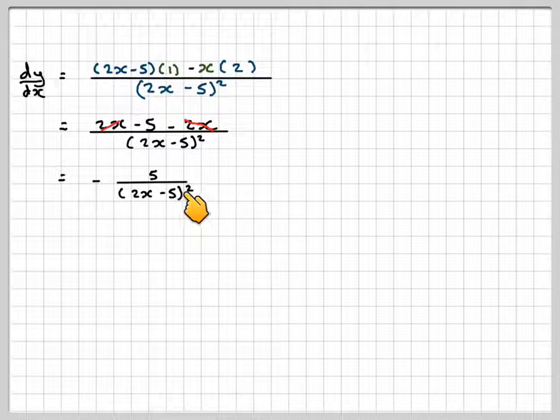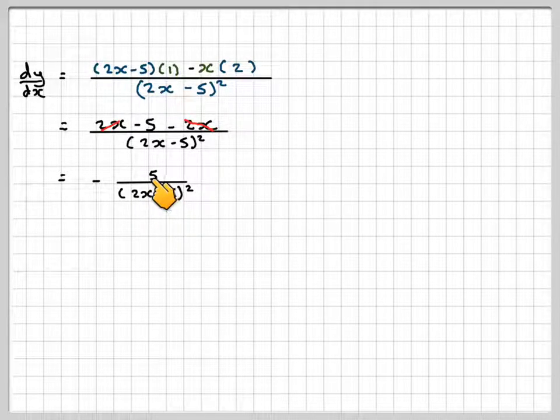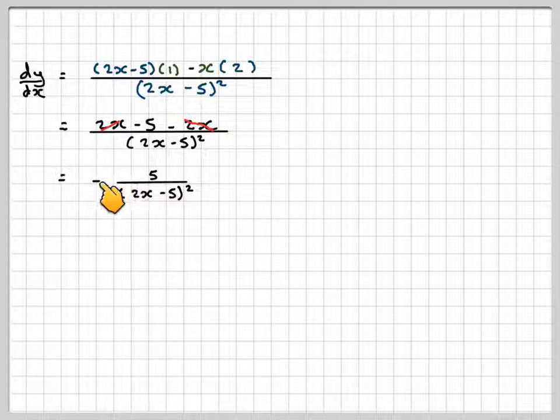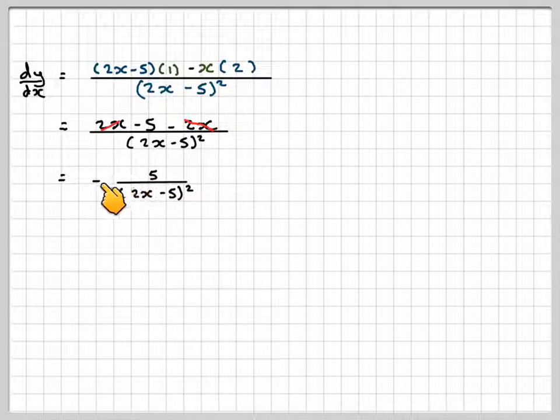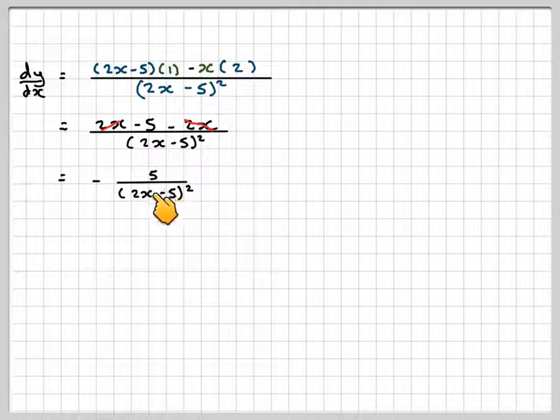Now, 2x minus 5 all squared, it doesn't matter what the value of x, provided it's not equal to 5 over 2, it's always going to be positive. If that is always positive, then all we're going to have to deal with is we've got minus 5 in the numerator which is always negative because it's not dependent on x. So if this is positive, the numerator will always be negative.